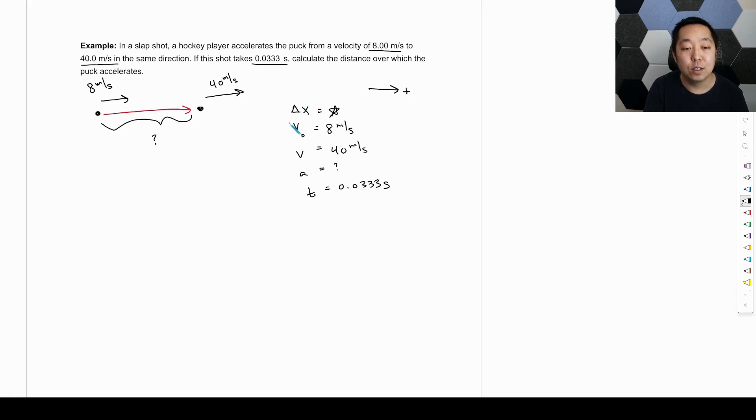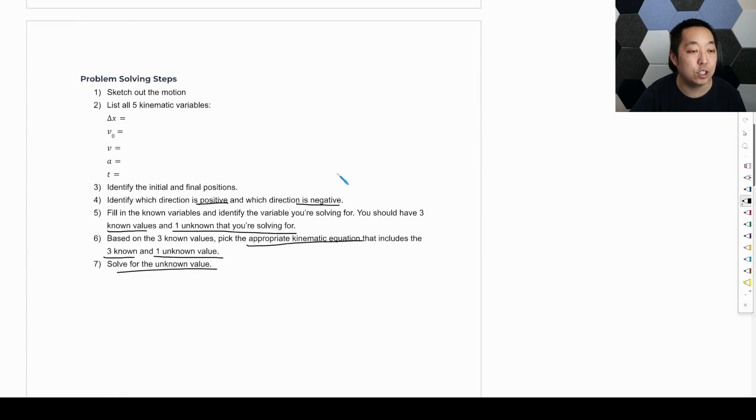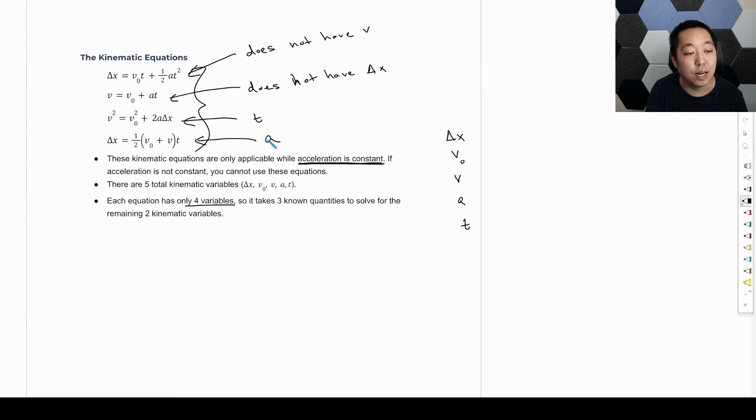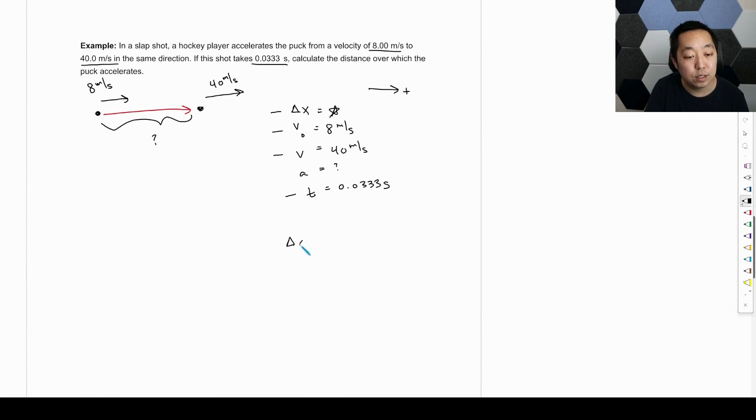And so given that, all right, we have three known quantities we can solve for any of them. So we're looking for an equation that has the displacement, initial velocity, final velocity, the equation that's missing the acceleration because we're not given that. But we have three known quantities and we're looking for the fourth unknown. If you go back to the equations, which one is missing the acceleration? It's going to be this equation right here. So the displacement is equal to one half V plus V zero times T. So just write it out and then just fill in the numbers. So this is going to be one half V is 40, V zero is eight, and the time is 0.0333. And so then you're just going to get your number there. So 0.5 times 48 times 0.0333, and that's going to be about 0.8 meters.